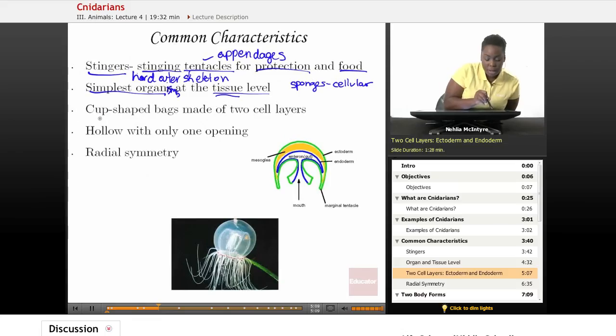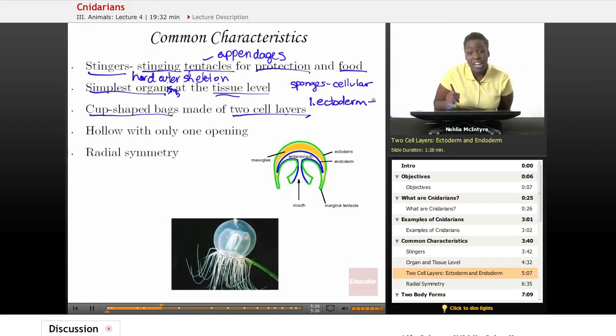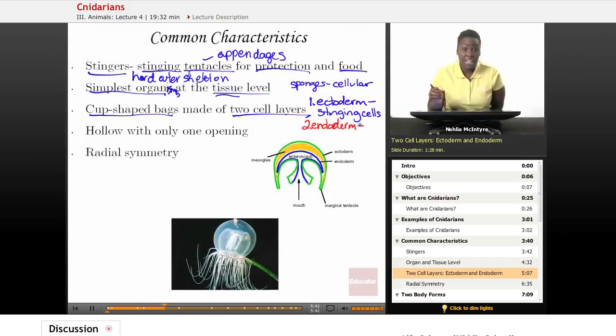Cnidarians are formed from a cup-shaped bag made up of two cell layers. The first cell layer is called an ectoderm, which is the outer layer made up of those stinging cells. The second layer is called the endoderm, which is an inner cell layer that protects the gut cavity where the digestive system is found. So it covers the digestive cavity of the Cnidarian.